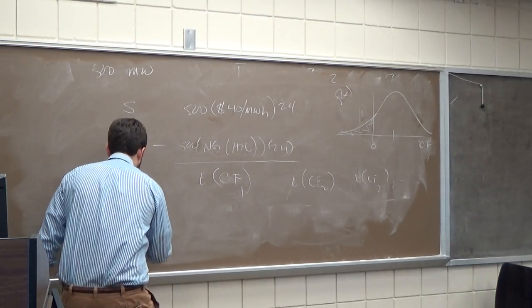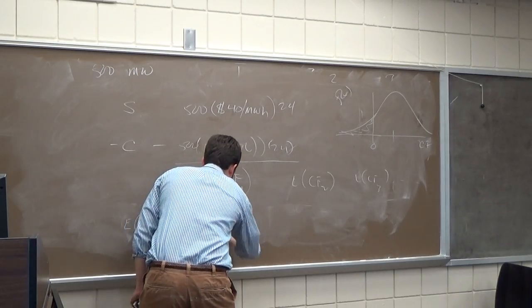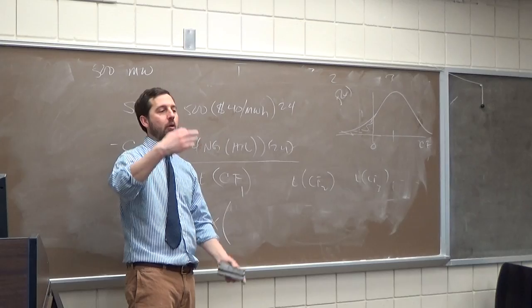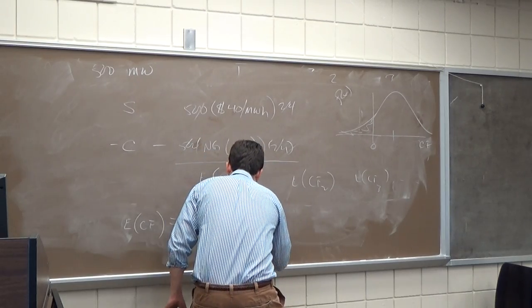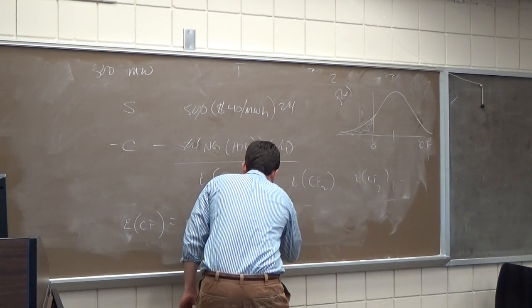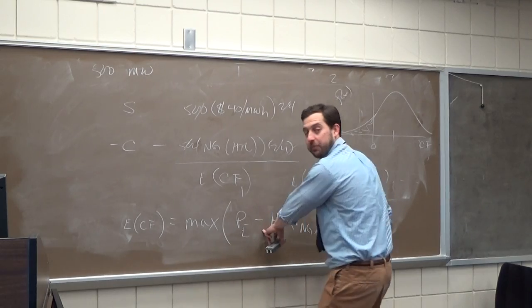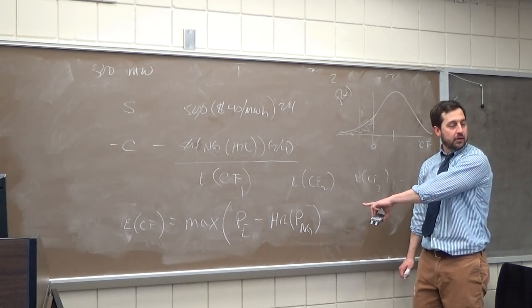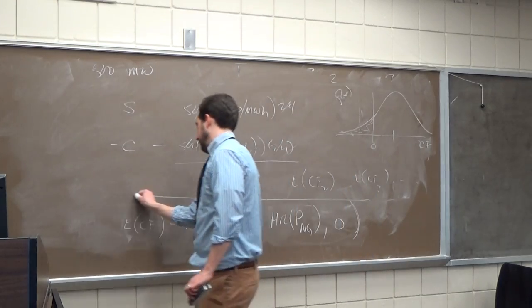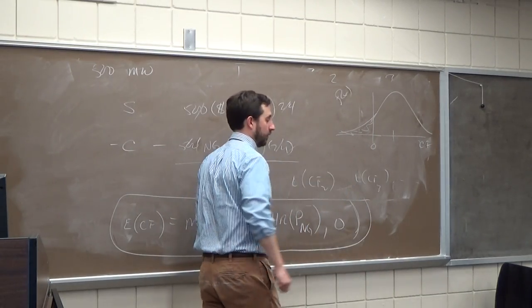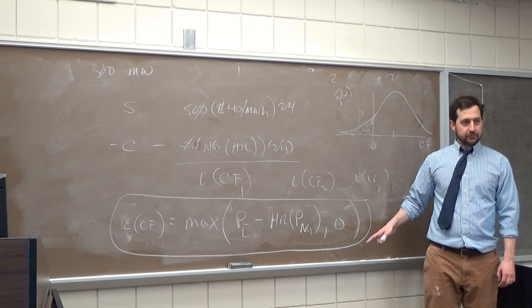So what we really should do is we really should include this case down here where it's less than zero because we'd shut down our plant and we wouldn't incur it. Does that make sense? So the cash flows of our plant aren't simply sales minus costs. The cash flows are going to be something like this. Our expected cash flow is actually going to be the maximum. And I'm going to drop the 500 in the hour. So this is the expected cash flow per megawatt per hour. It's going to be the price of electricity minus the heat rate times the price of natural gas. If it's positive, but if it's negative, we shut down the plant and earn zero.